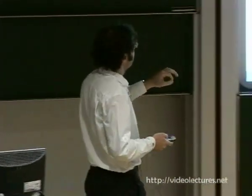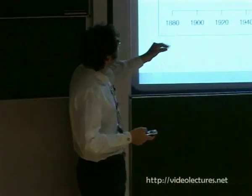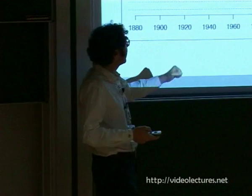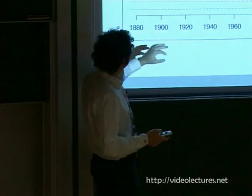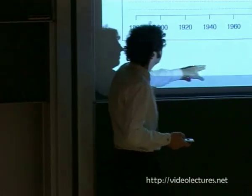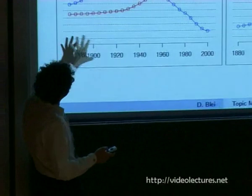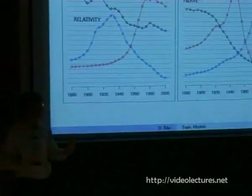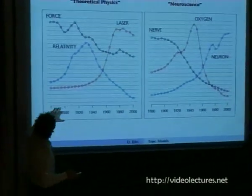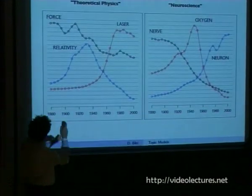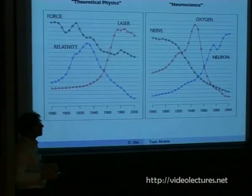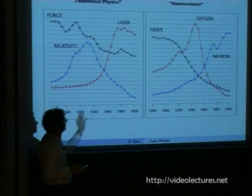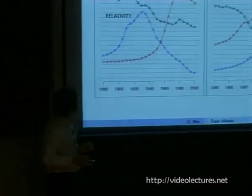We can also discover topics and understand how the words change within a topic through time. Here is time from 1880 until 2000, with two different topics and some words in those topics — you can see how their probability is changing over time. We can uncover these time-changing topics with topic models.